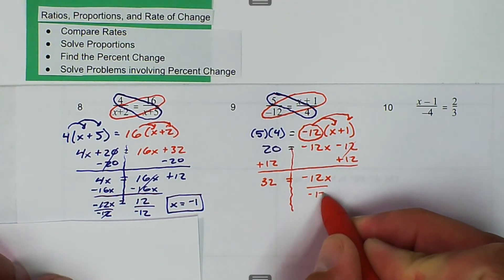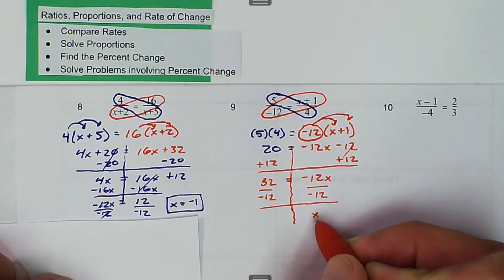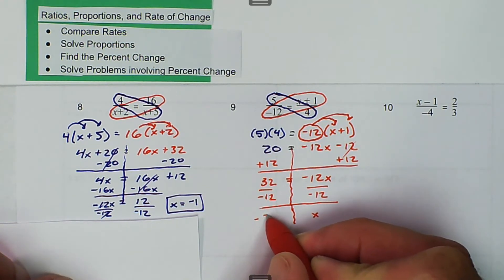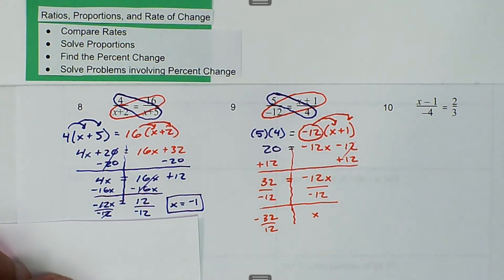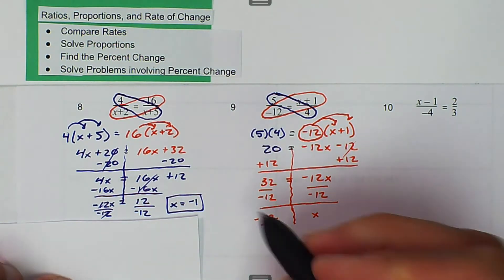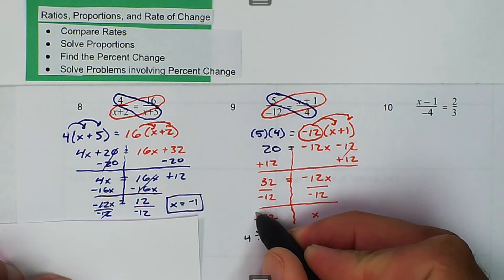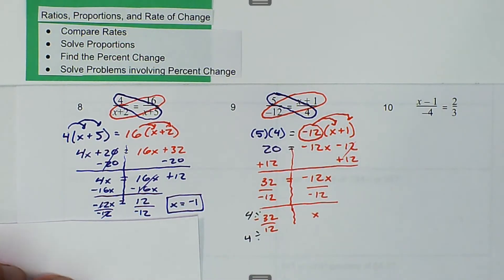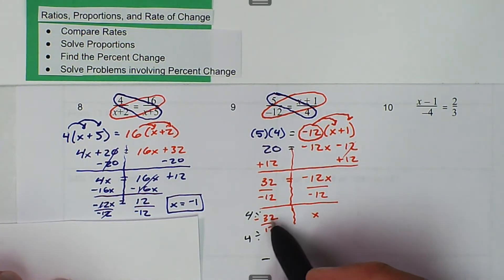And then we can divide by negative 12 to get the x by itself. We get negative 32 over 12, and we want to have it in the most reduced form possible. So we want to divide the numerator and the denominator by 4. The negative is going to stay because there's a negative in the numerator and a positive in the denominator. 32 divided by 4 is 8, and 12 divided by 4 is 3. And so that is our solution right there.